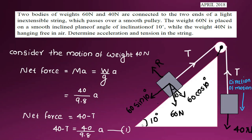We have one inclined plane of angle 10 degrees and the 40 N weight is in the air. We need to find the acceleration and tension. This is a smooth pulley, so the friction force is equal to zero.